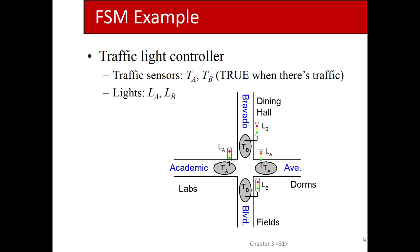Then we went into the traffic light example. The names of these streets are Academic and Bravado. TA is the traffic sensor input on Academic street, TB is the traffic sensor on Bravado. LA and LB are the outputs — the state of the traffic lights. Each is two bits because you have to represent three possible values: green, yellow, and red.